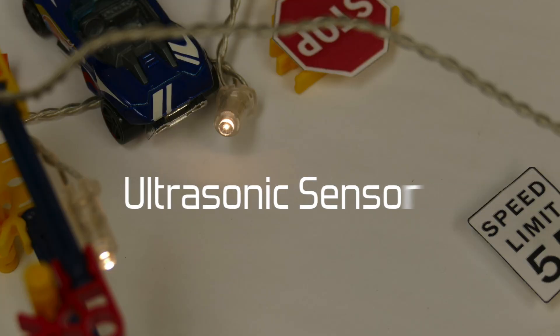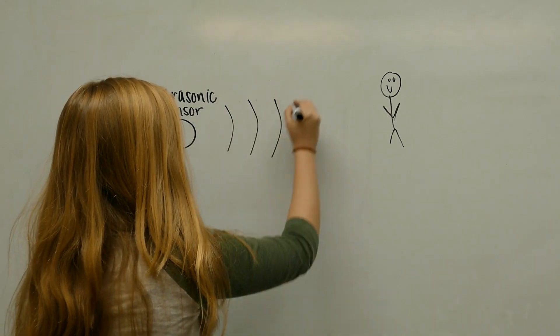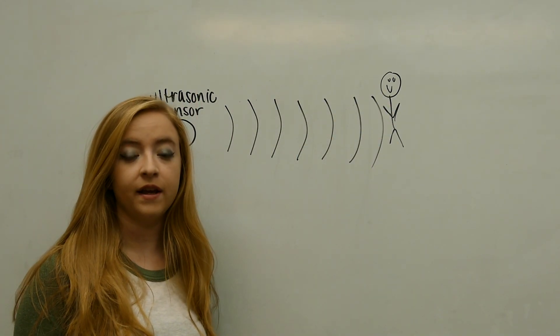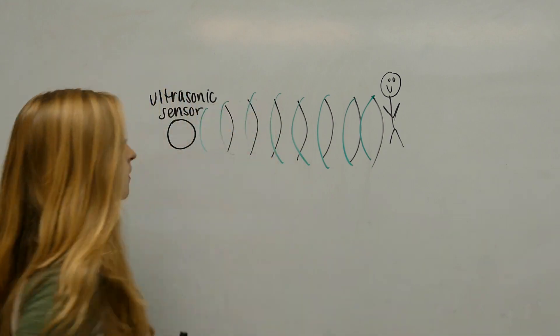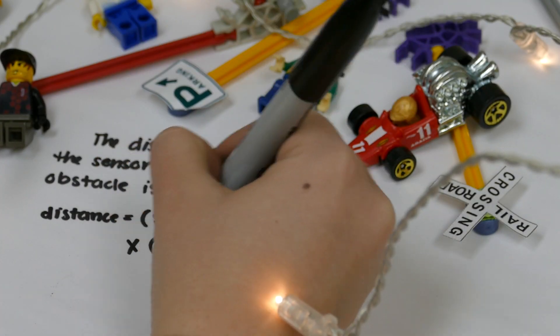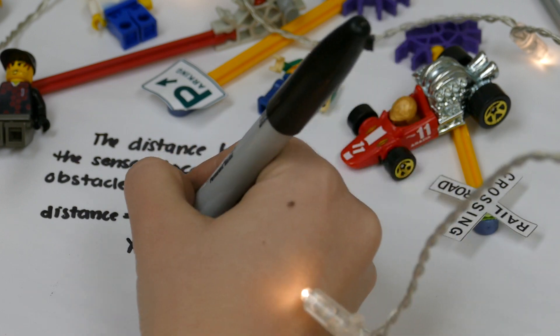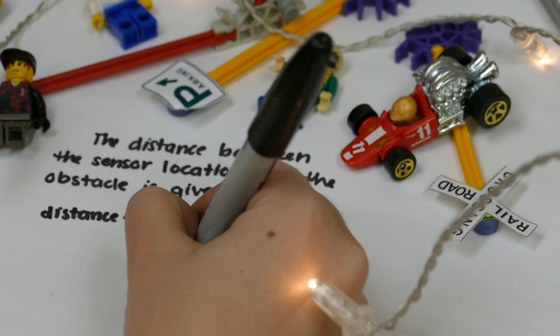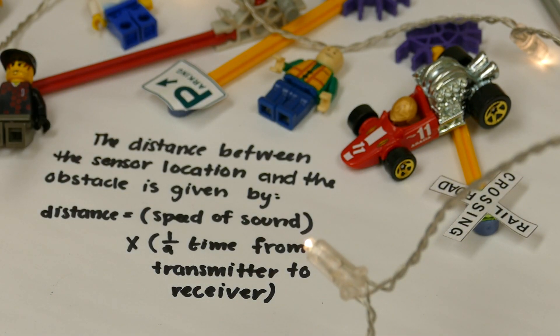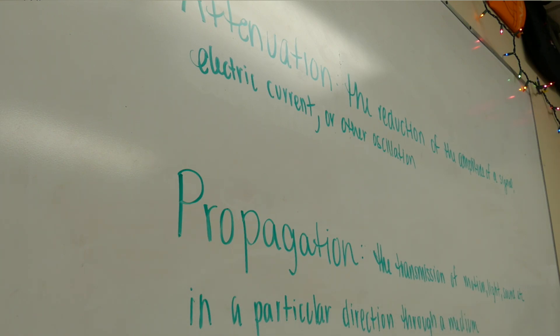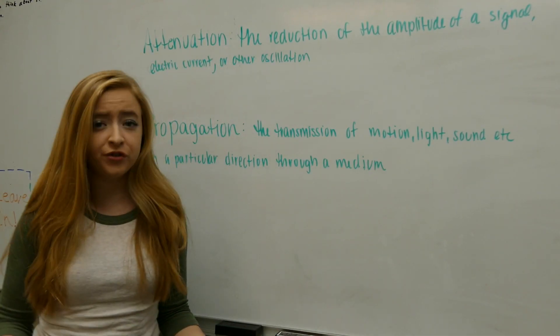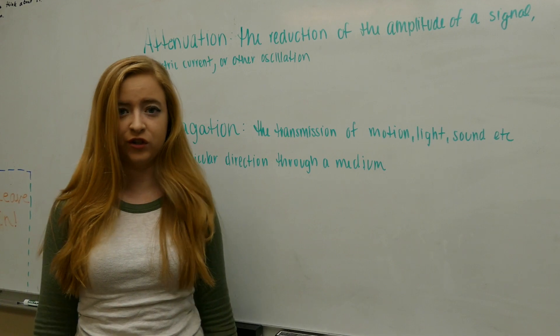Ultrasonic sensors produce sound waves that produce echoes after hitting an object. The distance between the location of the sensor and the obstacle is found simply by multiplying the speed of sound by half the total time from transmitter to receiver. Ultrasonic sensors have a limited range due to the attenuation of ultrasound in the air as well as the low propagation speed.